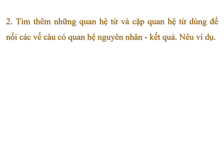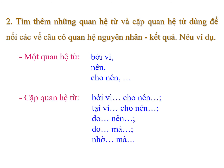Đã giải quyết xong ý 1. Bây giờ cô cho mình cùng chuyển sang ý 2: Tìm thêm những quan hệ từ, cặp quan hệ từ dùng để nối các vế câu có quan hệ nguyên nhân kết quả và nêu ví dụ. Các em dựa vào kiến thức đã học về quan hệ từ, hãy tìm thêm. Thứ nhất, 1 quan hệ từ: bởi vì, nên, cho nên. Cặp quan hệ từ: bởi vì...cho nên, tại vì...cho nên, do...nên, do...mà, nhờ...mà.